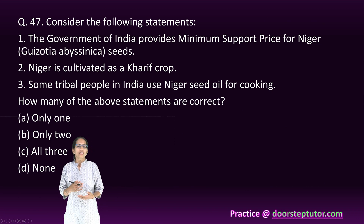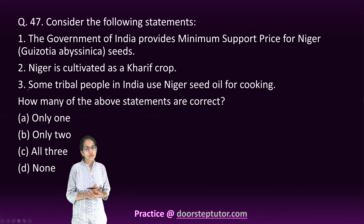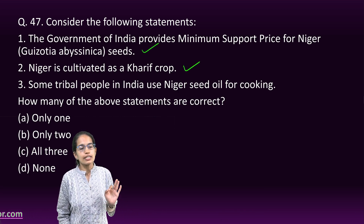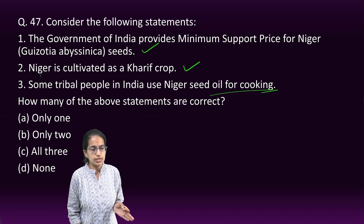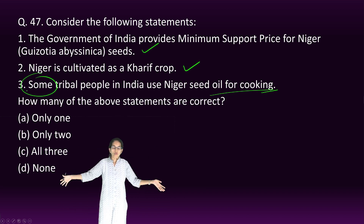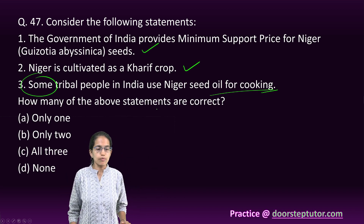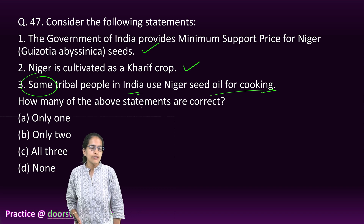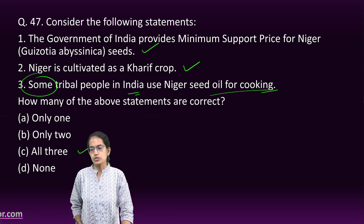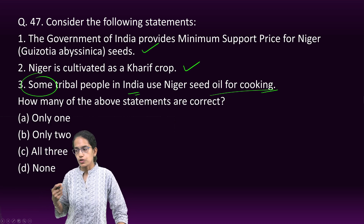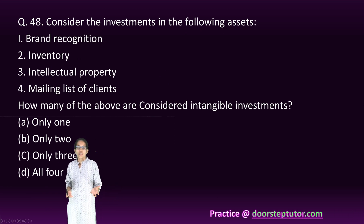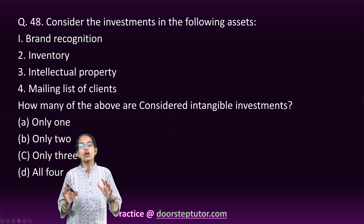On Niger seeds: The government provides Minimum Support Price for Niger seeds — correct. Niger is one of the 14 major Kharif crops — correct. Tribal populations use Niger for cooking — correct in context. Tribals also use Niger seed press cake for livestock feed, and it has some medicinal properties. So all three statements — 1, 2, and 3 — are correct.